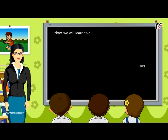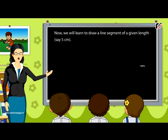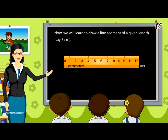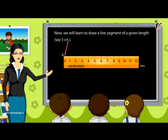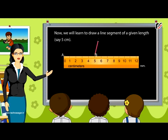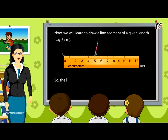Now, we will learn to draw a line segment of a given length, say 5 centimetres. Place and press the scale on the paper. Then mark two points A and B against the marks 0 and 5 of the scale. Keeping the scale evenly, move the pencil from A to B along the edge of the scale. So, the line segment AB is of length 5 centimetres.